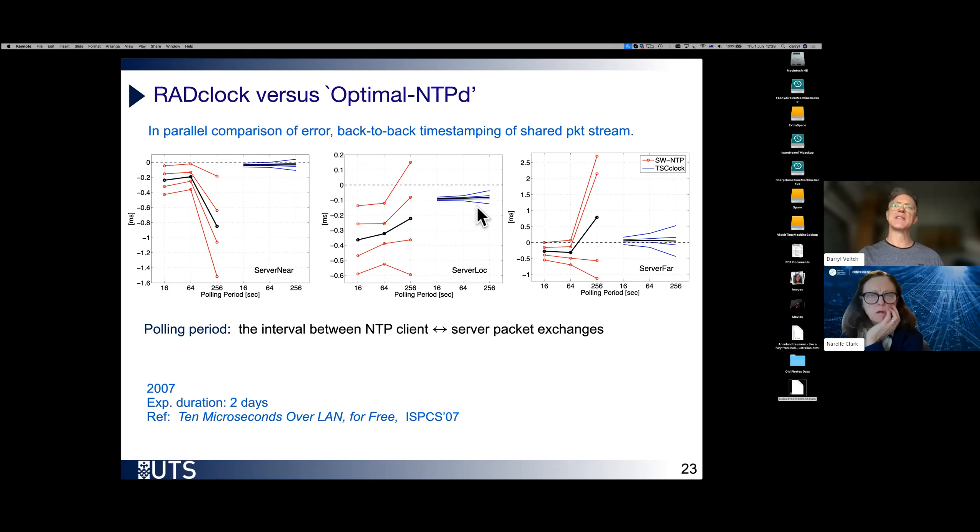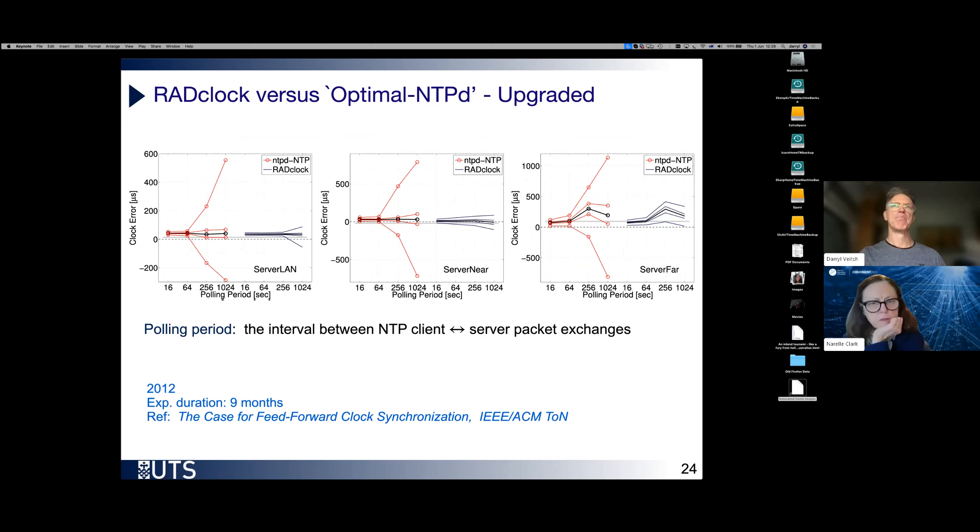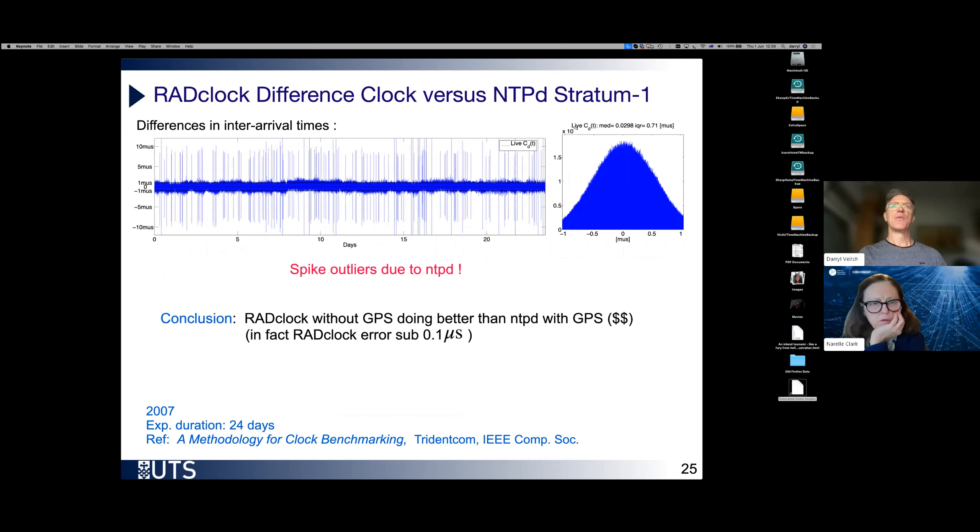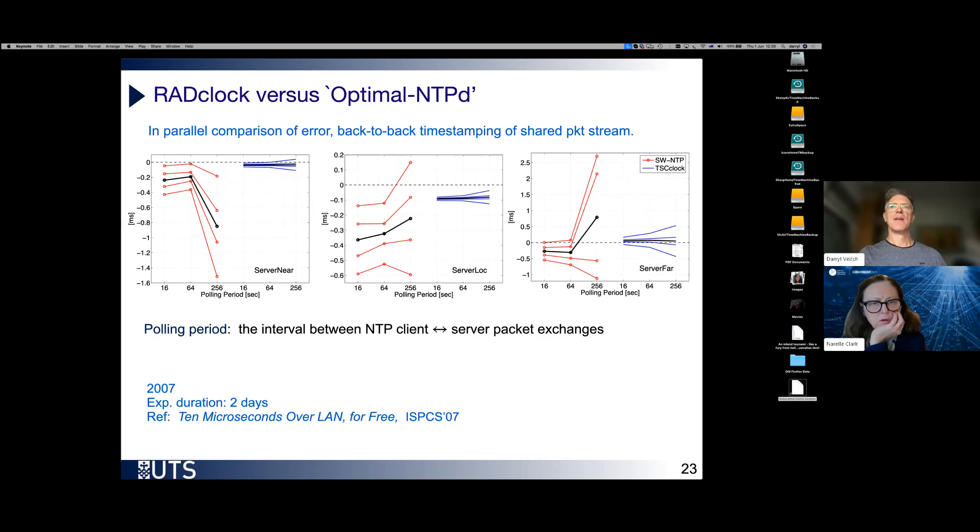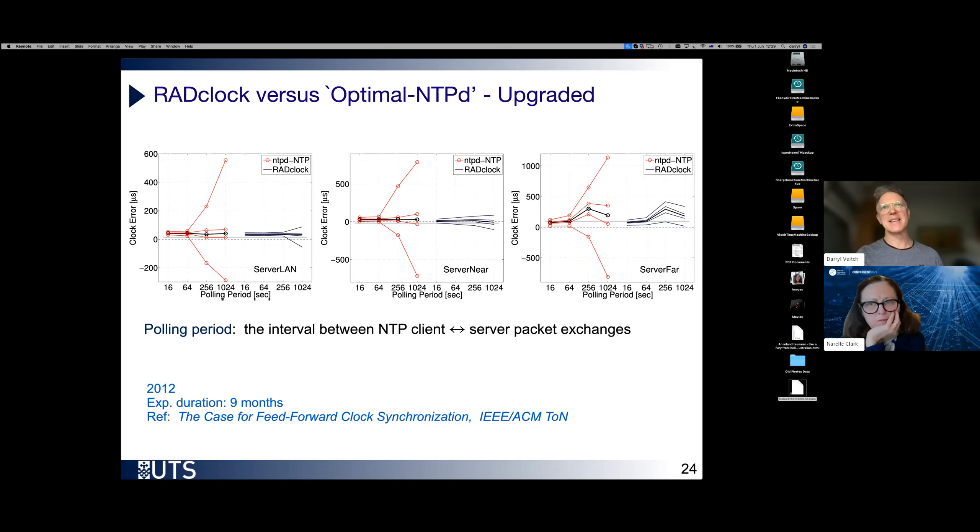And the main message that we're seeing here is that the whole range here from the second to the 98th percentile for RADclock will fit inside the interquartile range of the NTPD. I've got to slow down. We redid this experiment a number of years later, improving it in many respects.